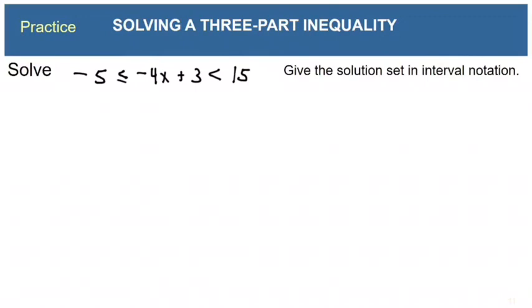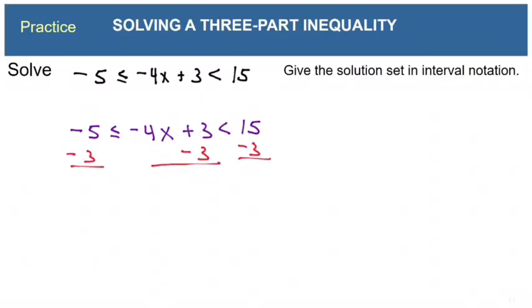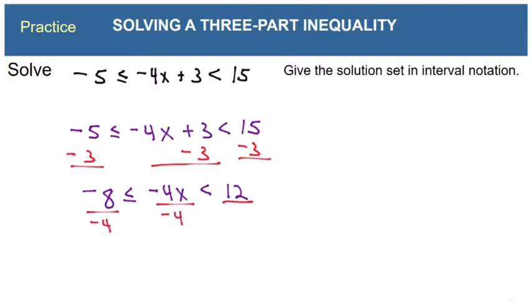I added one more practice problem to show what happens with a negative coefficient. Eliminate the constant by subtracting 3 from each piece: negative 8 is less than or equal to negative 4x, which is less than 12. Note we have two different symbols here. Divide each piece by negative 4 — that forces us to flip both symbols — giving 2 is greater than or equal to x, which is greater than negative 3.